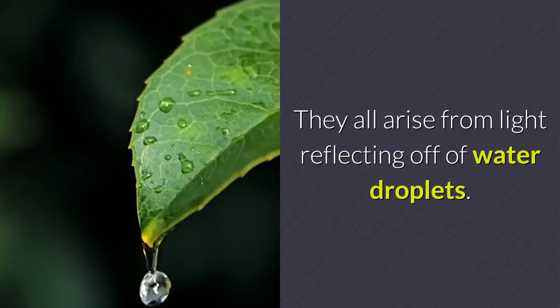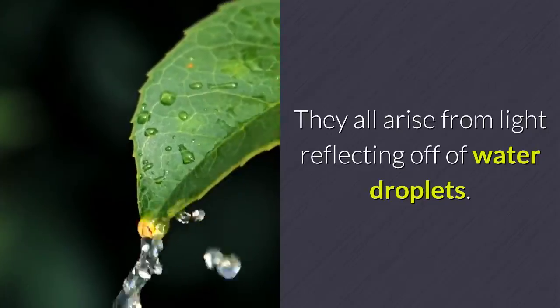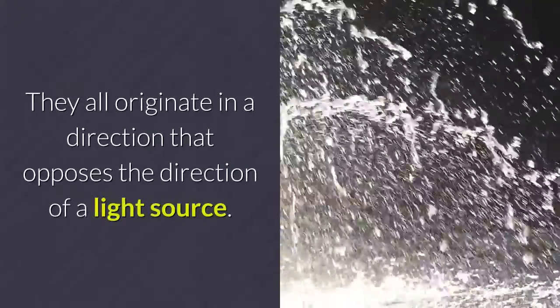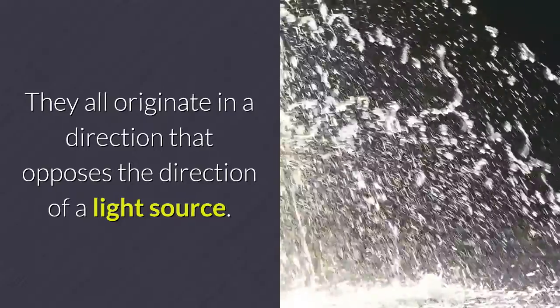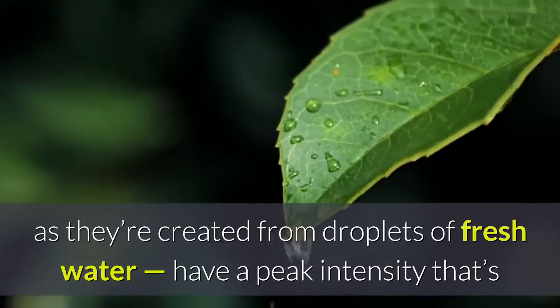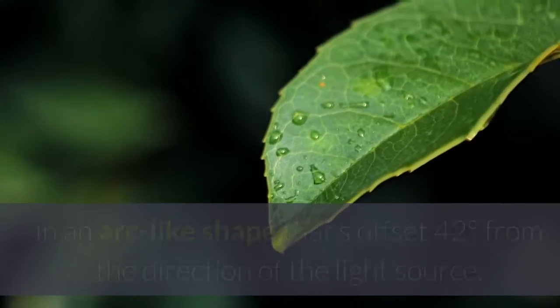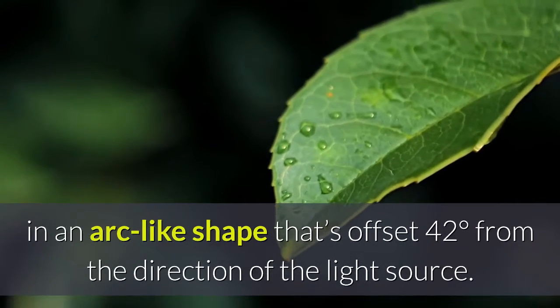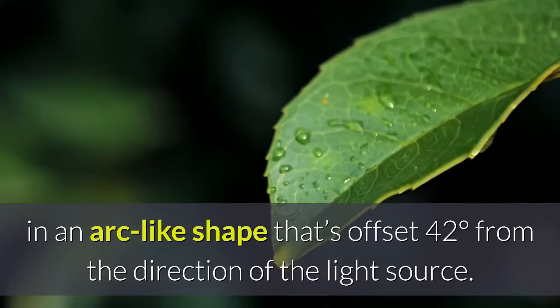They all arise from light reflecting off of water droplets. They all originate in a direction that opposes the direction of a light source. And they all, so long as they're created from droplets of fresh water, have a peak intensity that's in an arc-like shape that's offset 42 degrees from the direction of the light source.